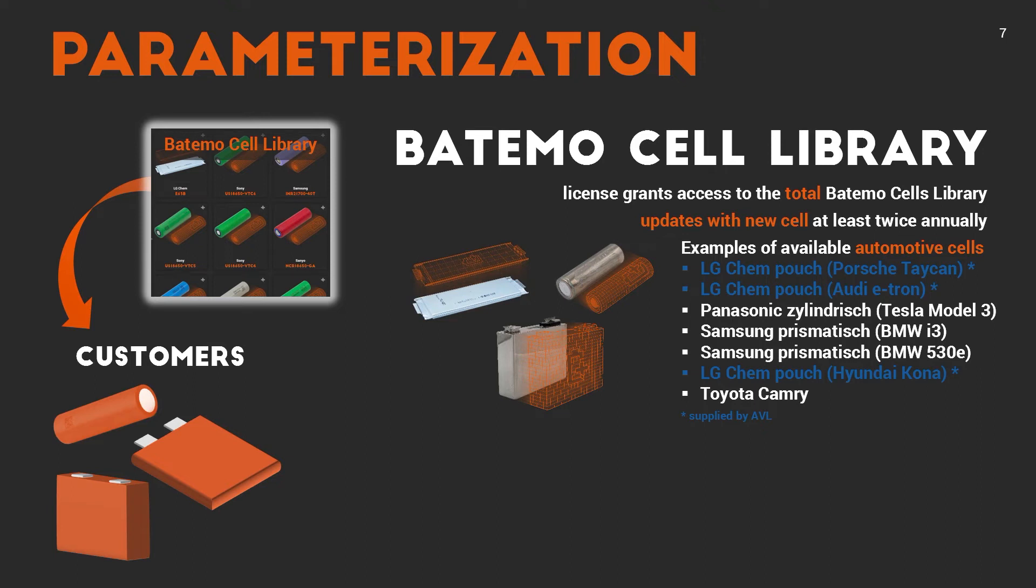But how do we make sure that it describes precisely your cell? There are basically two ways how you can end up with a parameterized model of exactly your cell. The first is just use a model of the Bitimo cell library. That's basically a library of those validated models. It's just a one-time access fee and you get access to all of the models in the library. Regular updates with new cells at least twice annually are included. And as you see on the slide, there are already quite a few automotive cells available.